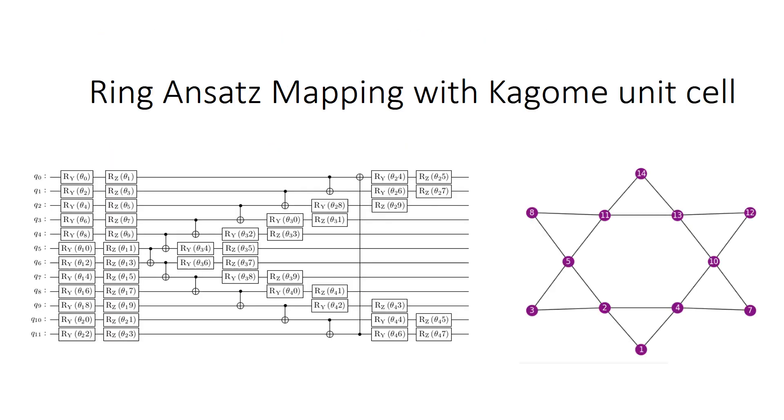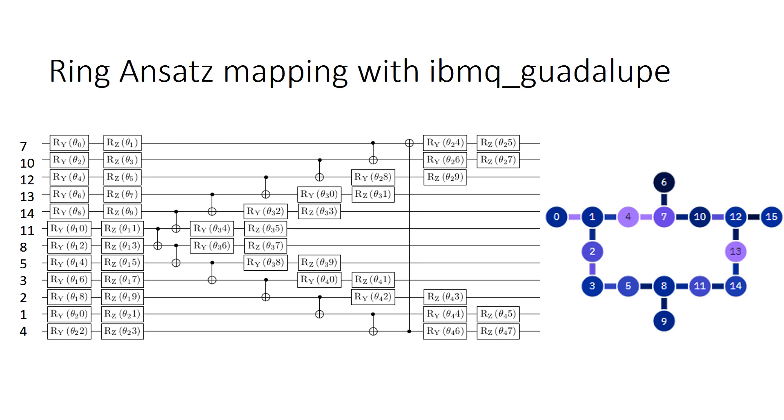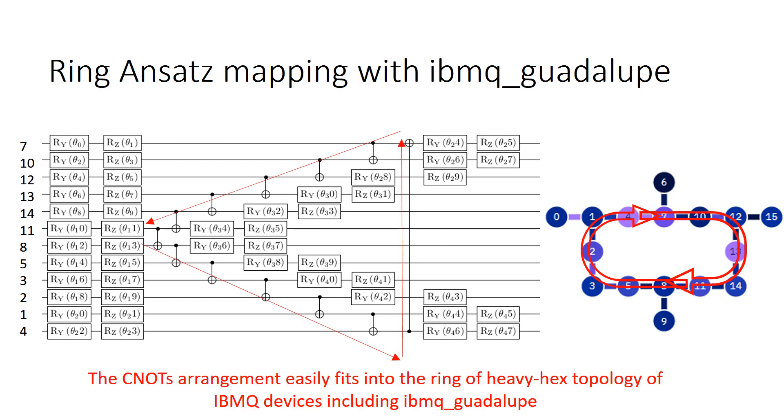The proposed ring ansatz accurately mirrors the topology of Kagome unit cells. So if we loop around the lattice sites and make a complete loop around the unit cell, we can see that in the circuit shown on the left, the CNOTs constituting the ring ansatz circuits also make a ring or a loop. And at the same time, these ansatz also map to the heavy hex architecture of the Guadalupe chip and of several other IBM Q quantum devices with different versions and expanded versions of the heavy hex architectures.